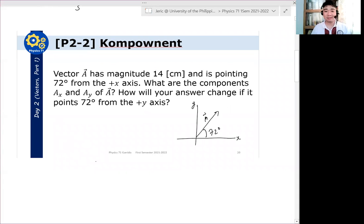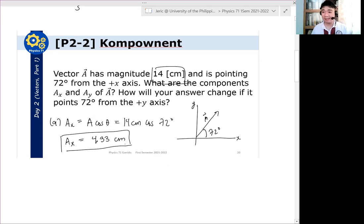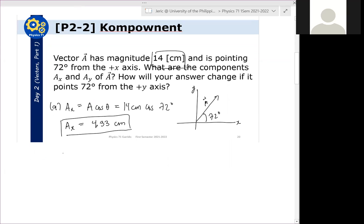Okay, now the question is what are the components Ax and Ay of A? Again, your x component is what? This is just magnitude of A cosine of theta. But what is A? The magnitude of A is 14 cm and we have 14 cm cosine of 72 degrees. And therefore, one can show that the answer is about 4.33 centimeters.